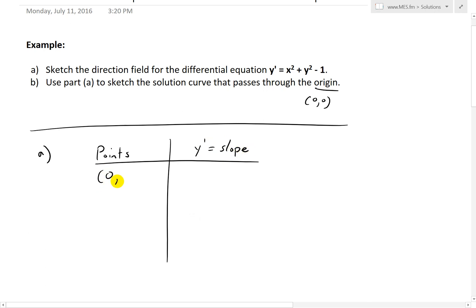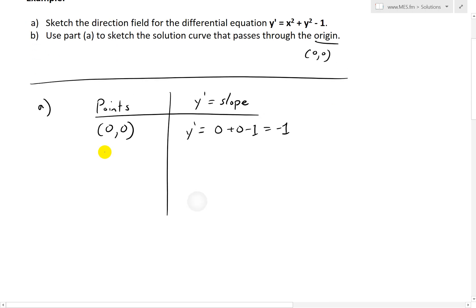So for example, the point (0, 0), this slope is going to be equal to 0² + 0² - 1, which equals -1. And then the point (0, 1), for example, this y' equals 0² + 1² - 1. One squared is just one minus one, which equals zero.